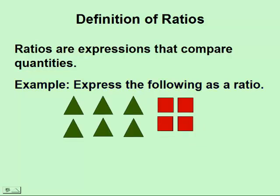First, we'll organize our information, and we can see there are six triangles to four squares. We can express this in a ratio as six to four.